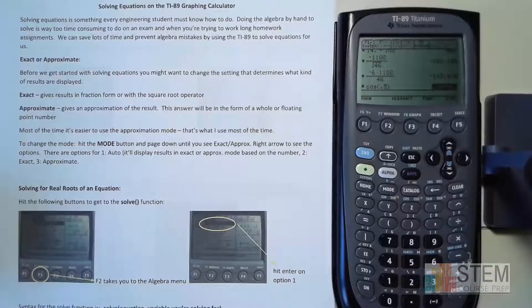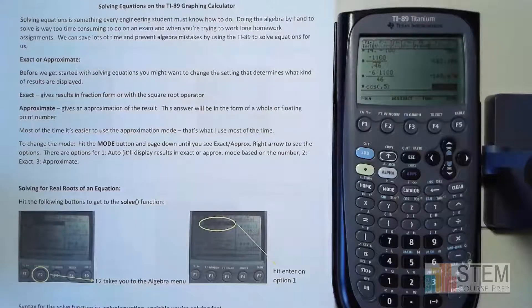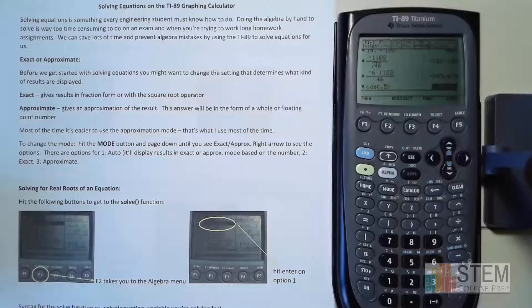We're going to go over solving equations on our TI-89 graphing calculator today. This is going to save you a ton of time, especially if you are in a class like statics. If you're an engineering student, you'll probably take statics at some point and you're going to have systems of equations — three algebraic equations where you have to solve for three unknowns. Doing that by hand takes a long time, so learning to do it on the calculator will save you a lot of time.